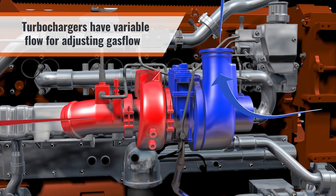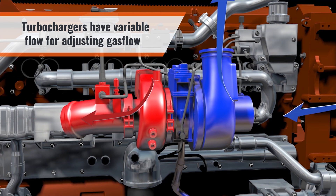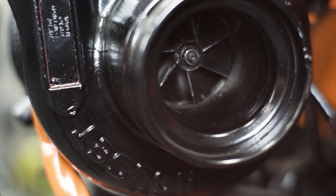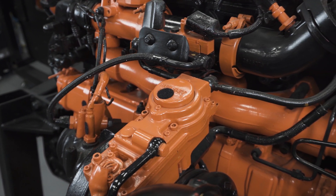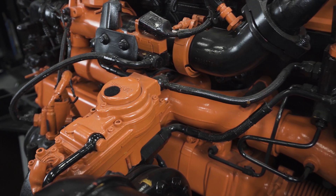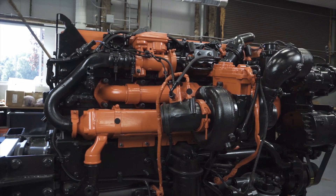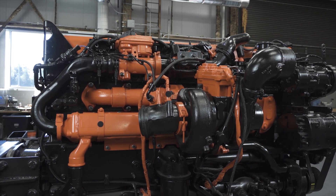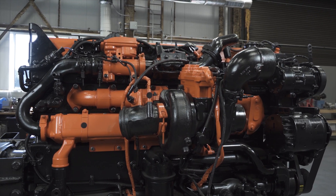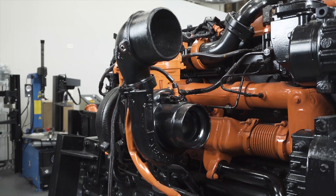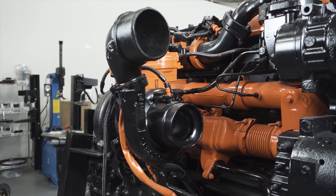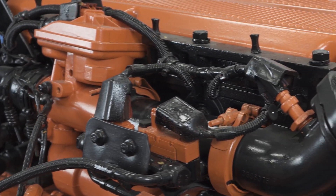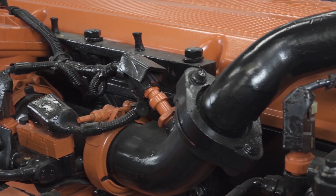A VG turbocharger has variable vanes and/or flow passages inside the turbine housing that allow adjustments to the exhaust gas flow as it feeds into the turbine wheel. A wastegate — a device that bypasses exhaust gas around the turbine wheel — is another method to adjust gas flows. With EGR engines, wastegates are most often used with a dual turbocharger arrangement rather than a single turbo. If the engine has both variable turbocharging and an EGR valve, there are two devices being used to control air flows and pressures.